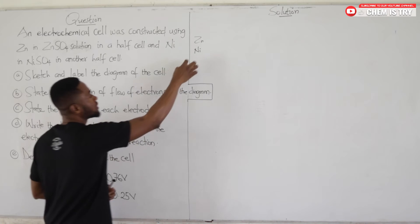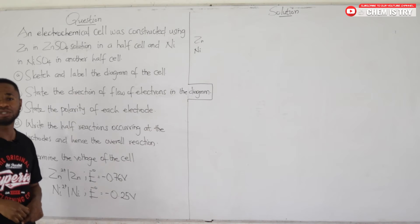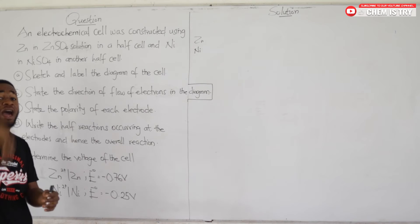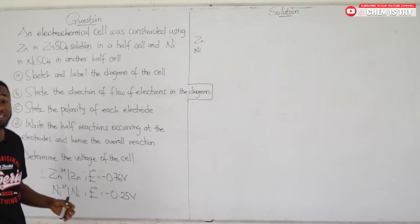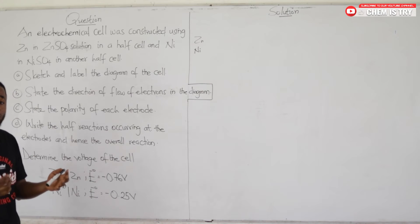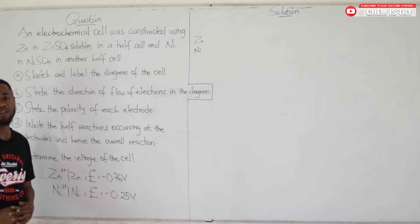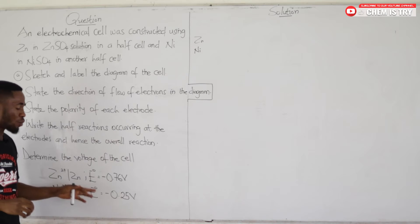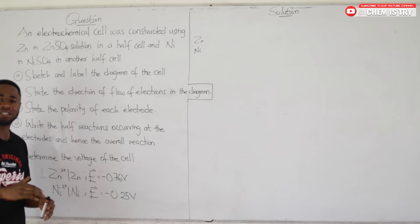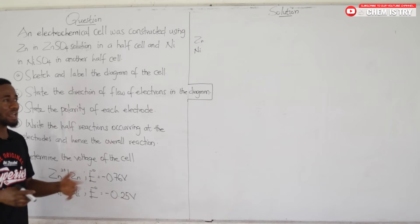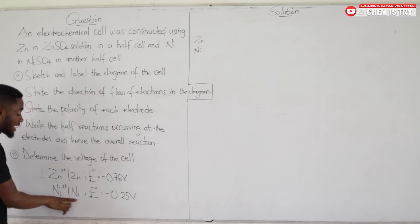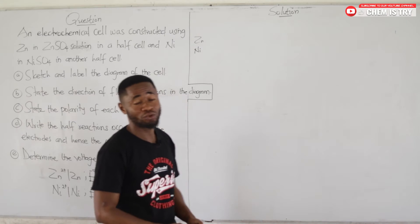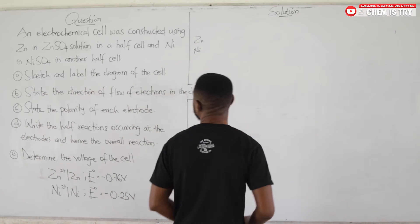To summarize: using the electrochemical series, the element above becomes the anode (site of oxidation) and the one beneath becomes the cathode (site of reduction). Using standard reduction potential values, the more positive or less negative value gives us our cathode, and the more negative value gives us our anode. From the values given, nickel serves as our cathode and zinc as our anode. With that said, let's start by sketching the cell.